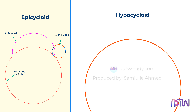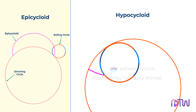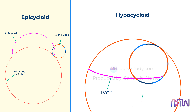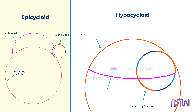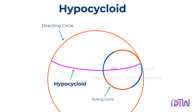Similarly, if a circle rolls one complete revolution on the inner side of the circle's path, as shown, the path traced by a point on the circumference of the rolling circle is called the hypocycloid. The procedures to construct these two are similar, with small changes. In this video, let's understand how to draw a hypocycloid.